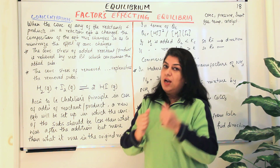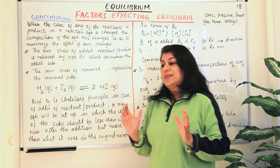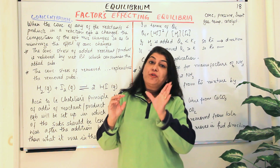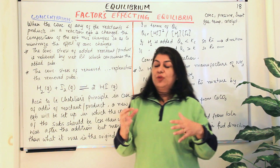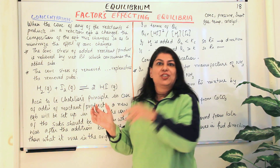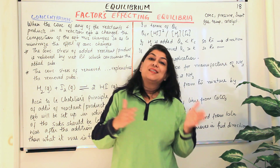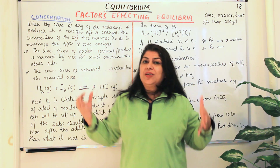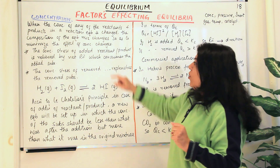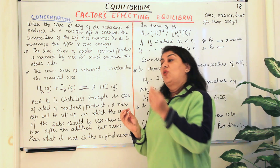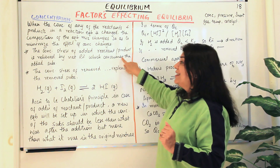Whenever the concentration is changed, according to Le Chatelier's principle, the reaction will proceed in such a direction that can remove that effect. If you add a reactant or a product, the reaction will proceed in the direction which uses up that reactant or product to bring it back to equilibrium. If you remove a reactant or a product, the reaction will start proceeding in the direction in which it can replenish it. The reaction tries to move in a direction to make up for that change.